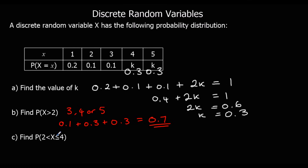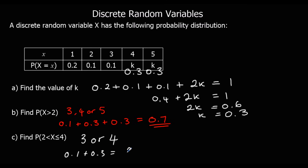Part c: find the probability that x is bigger than 2 but less than or equal to 4. That means it can't be 2, but it can be 3 or 4. So that's 0.1 plus 0.3, which is 0.4.